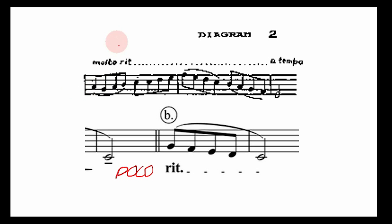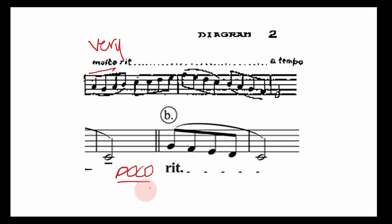Sometimes you'll be given more specific direction, like 'molto rit' — molto means 'very' — so when you see something like that, you're doing a super dramatic slowdown. Whereas 'poco rit' or 'poco ritardando' means just a little ritardando — just a little pinch of slowdown.